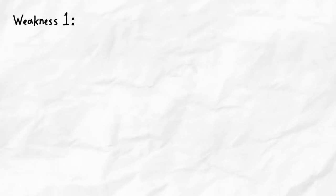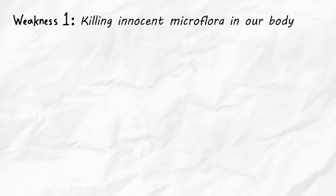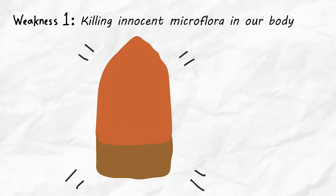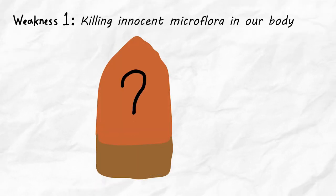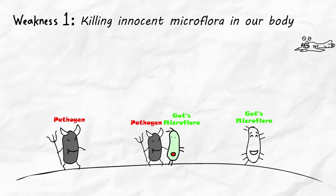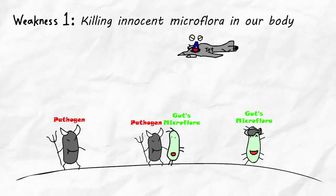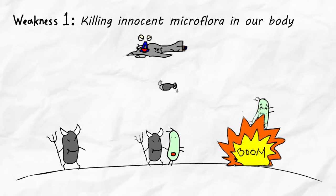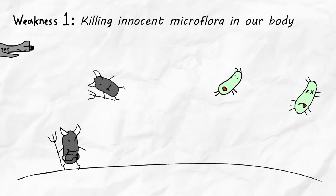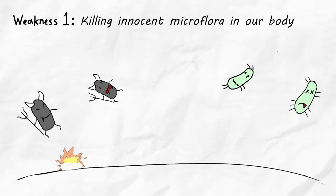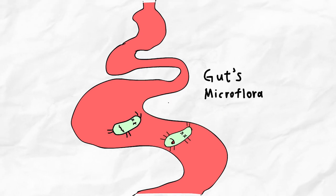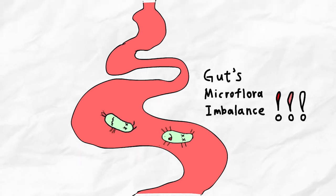Weakness 1: Killing innocent microflora in our body. In fact, the name 'magic bullet' for antibiotics is not as great as it sounds. The antibiotic doesn't only kill the pathogen in our body, but can also kill our body's microflora, which are bacteria as well. This may cause an imbalance in our gut microflora.